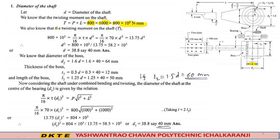We also know that the twisting moment on the shaft T equals π/16 × d³ × τ. From this equation, solving for d, we get d cubed. After simplification, d equals 38.8 mm, nearly 40 mm.